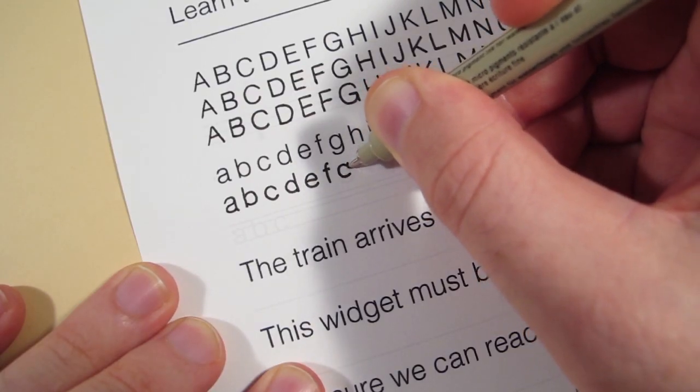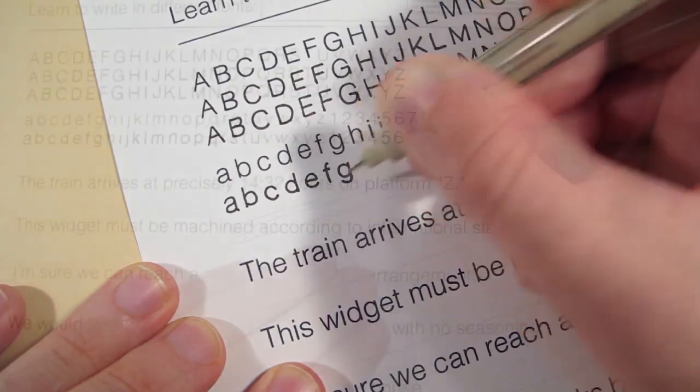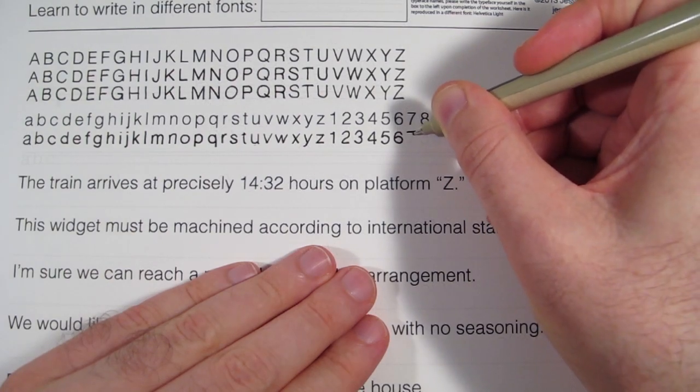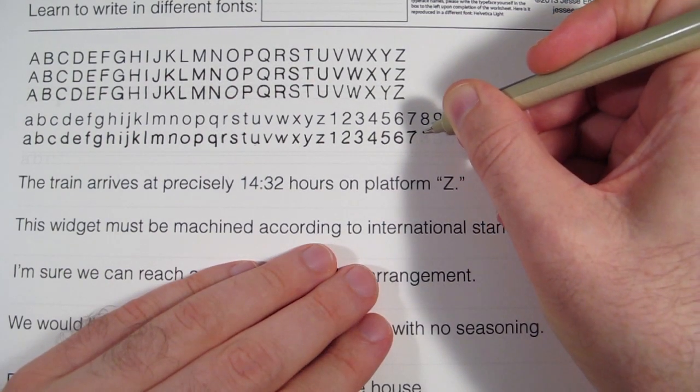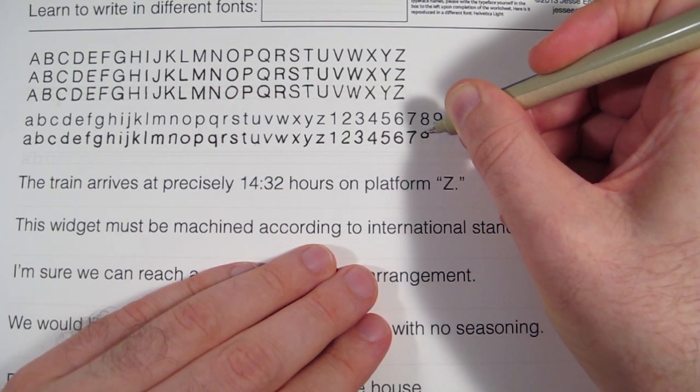The lowercase letters are even more difficult than the uppercase section. But don't worry about being too precise. Just trace, then copy what you see.